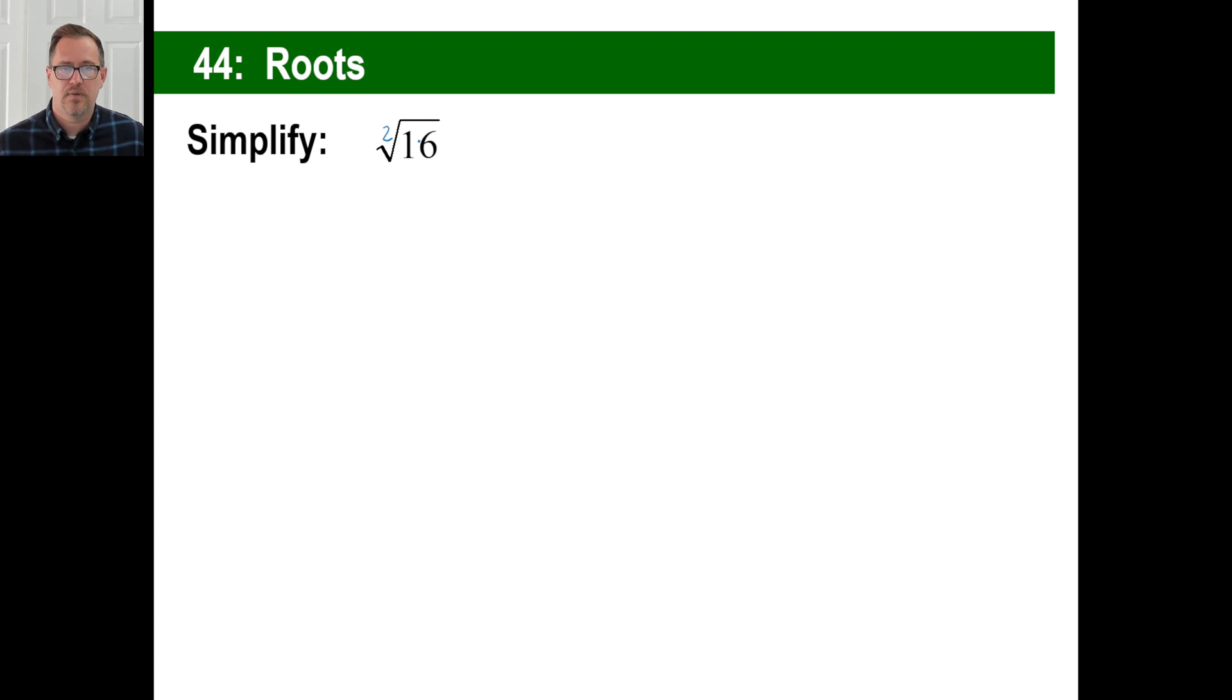Well, if you don't see a number there, you just assume it's a square root. Sometimes you save time. So what's the square root of 16? In other words, what number times itself two times gives you 16? And of course, the answer is four. That's it.